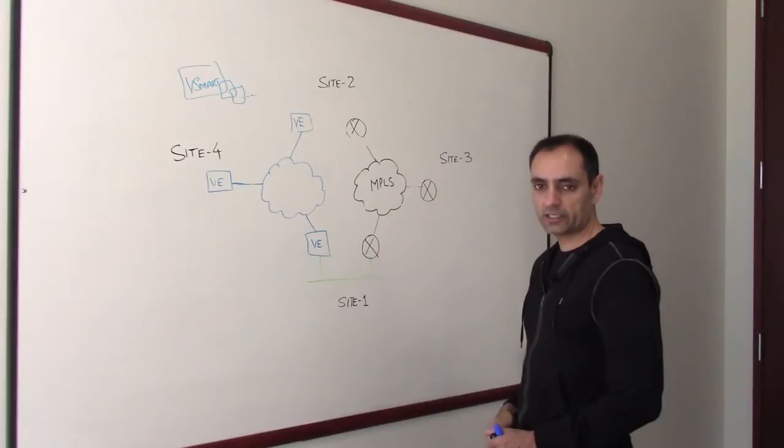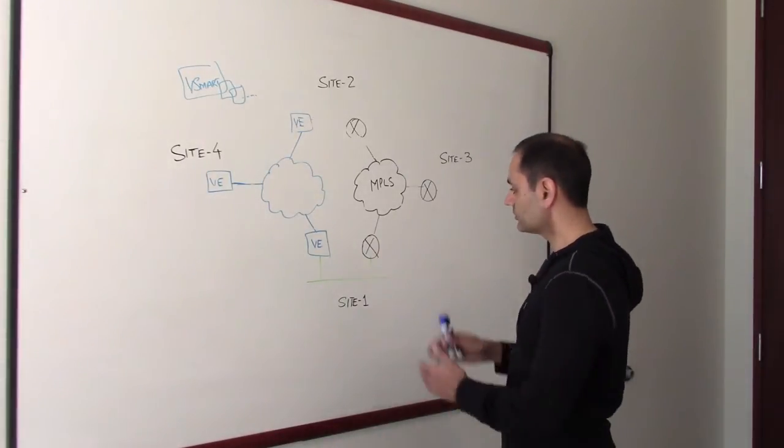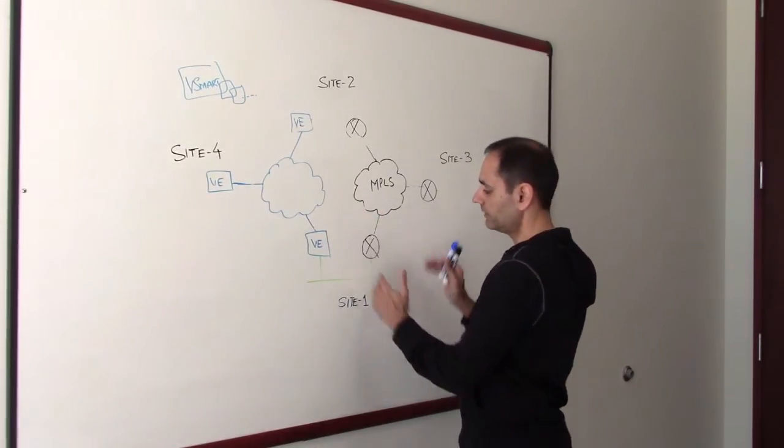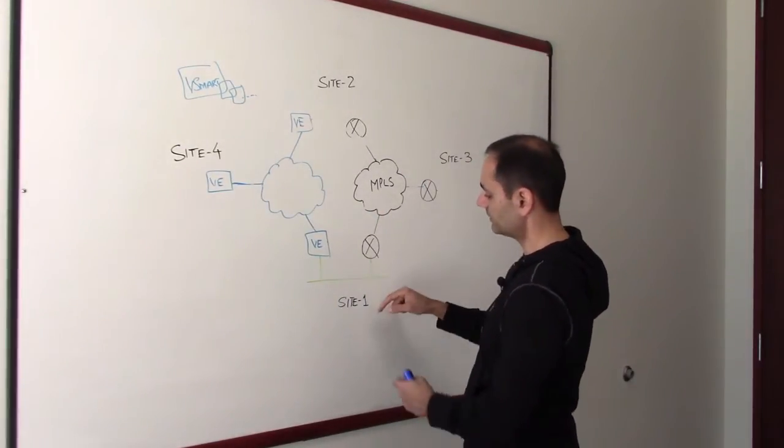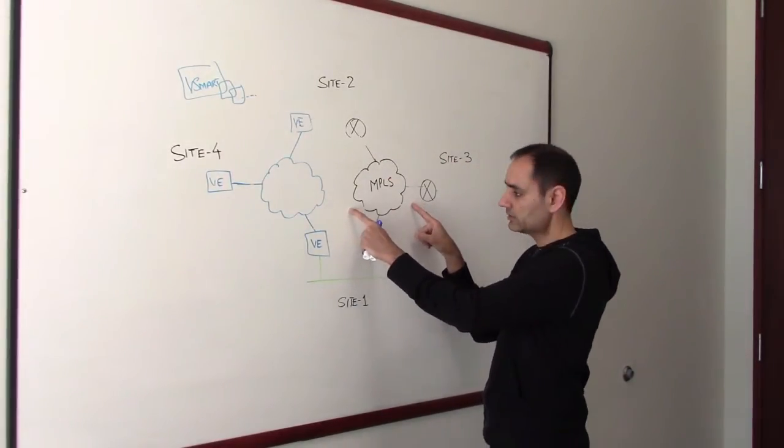So let's start by going over the diagram I have on the whiteboard. Let's assume that in the beginning what you have is MPLS WAN. You have different sites: site one, site two, and site three, and they are connected via the MPLS WAN.